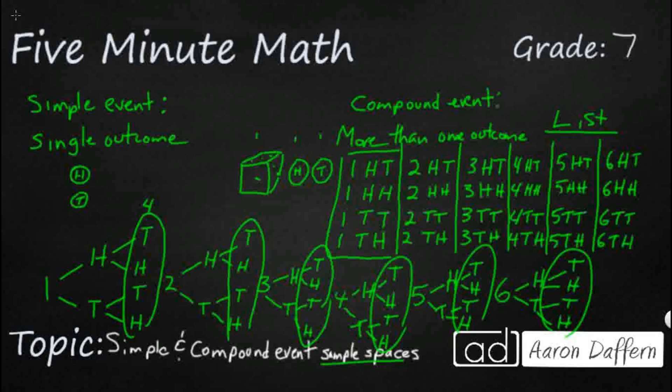Now, how do we find that without making a list or a diagram? Well, what we do is say, how many possibilities are there for our cube? Six. How many possibilities are there for our coins? Two each. And if you multiply six times two times two, guess what you get? The number of possible outcomes, 24.